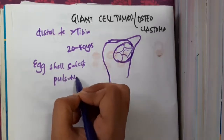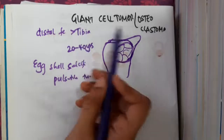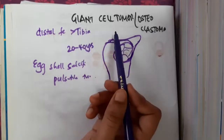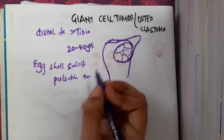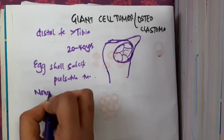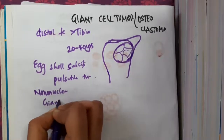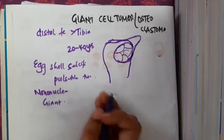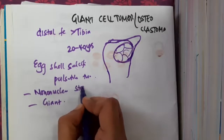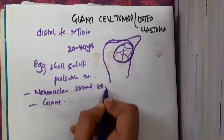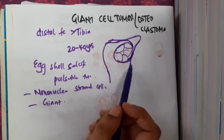There are two types of cells seen in giant cell tumor: mononuclear stromal cells and multinucleate giant cells. Both mononuclear stromal cells and multinucleate giant cells are present in giant cell tumor.